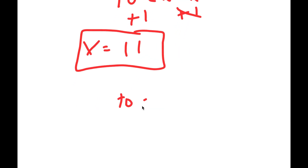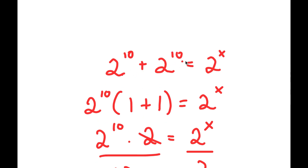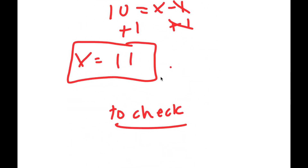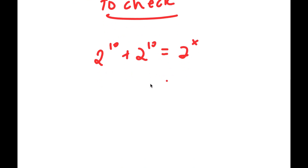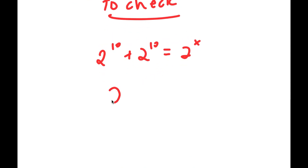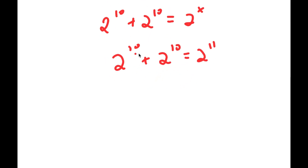Now to check: the original equation was 2 to the power of 10 plus 2 to the power of 10 is equal to 2 to the power of x. With x equal to 11, 2 to the power of 10 plus 2 to the power of 10 is equal to 2 to the power of 11. And indeed that is 2 to the power of 11, so this is right.